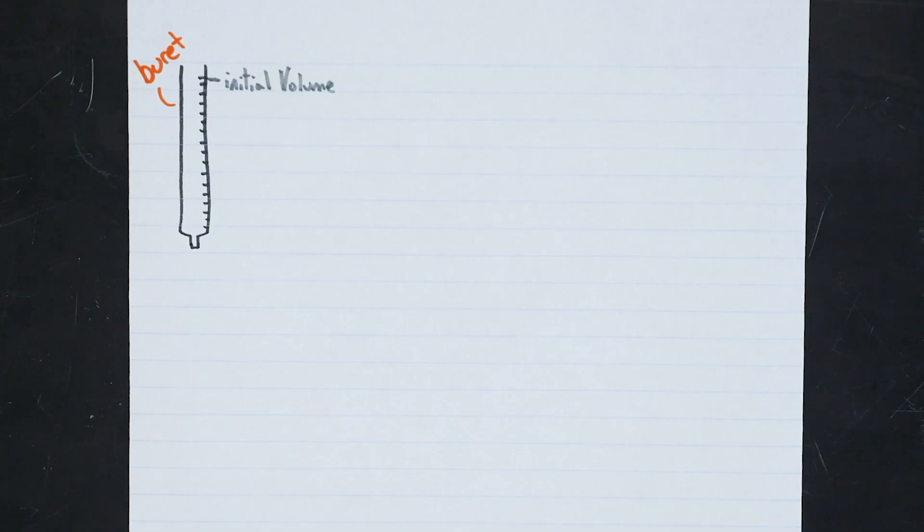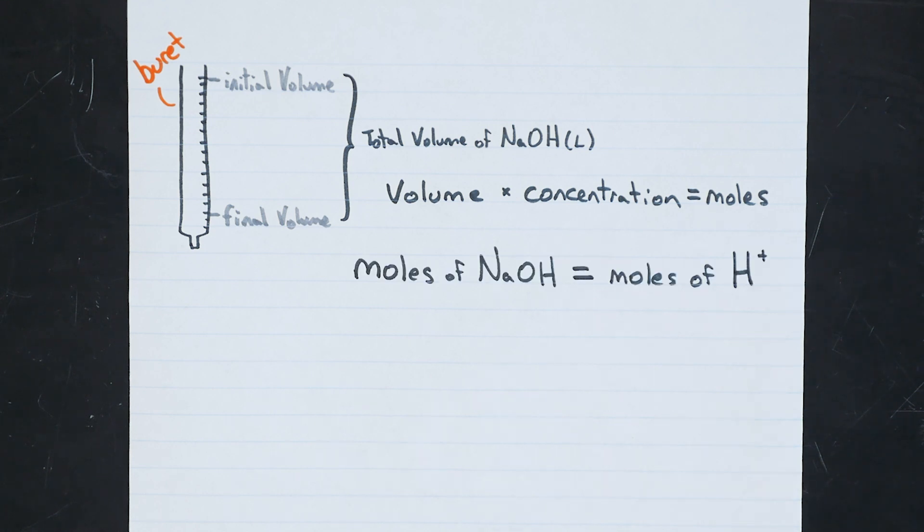Using your initial and final burette readings, you can determine the total volume of NaOH or sodium hydroxide that you used. Since we know the concentration of the sodium hydroxide, we can multiply concentration by volume to get the total moles of sodium hydroxide we used from the burette. This must be exactly equal to the moles of hydrogen ions we had. Now since one calcium ion displaces two hydrogen ions, the number of calcium ions in your original solution must be exactly half of the number of moles of H+.